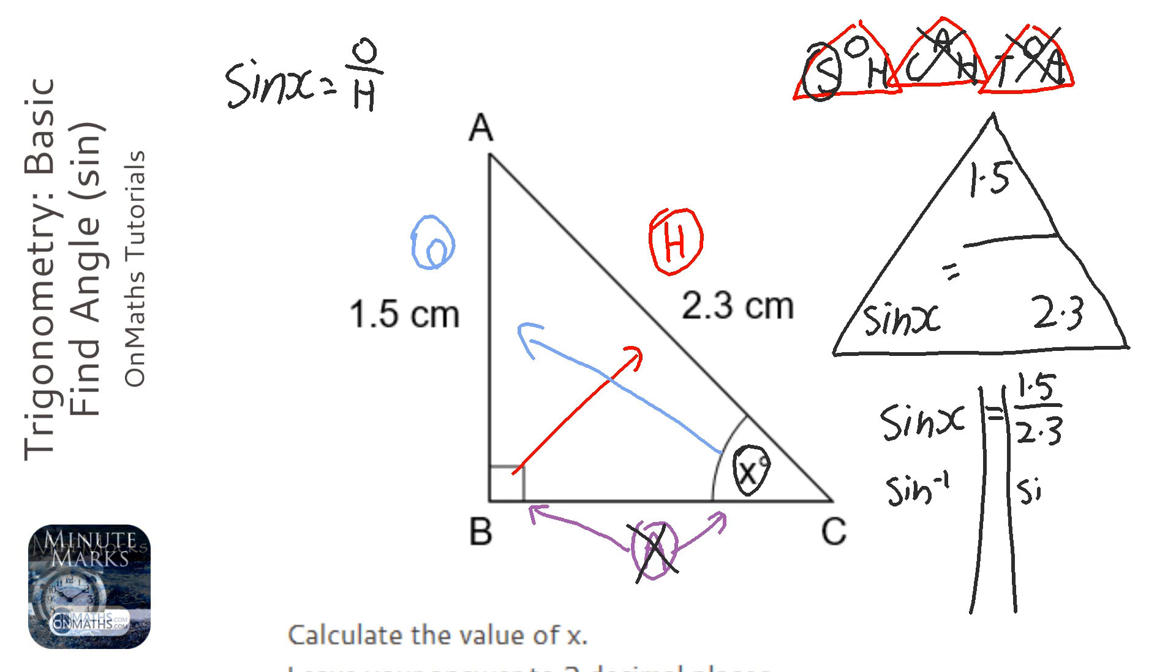We do the inverse sin of both sides. So that leaves x on the left-hand side. And we're going to do the inverse sin of 1.5 over 2.3.